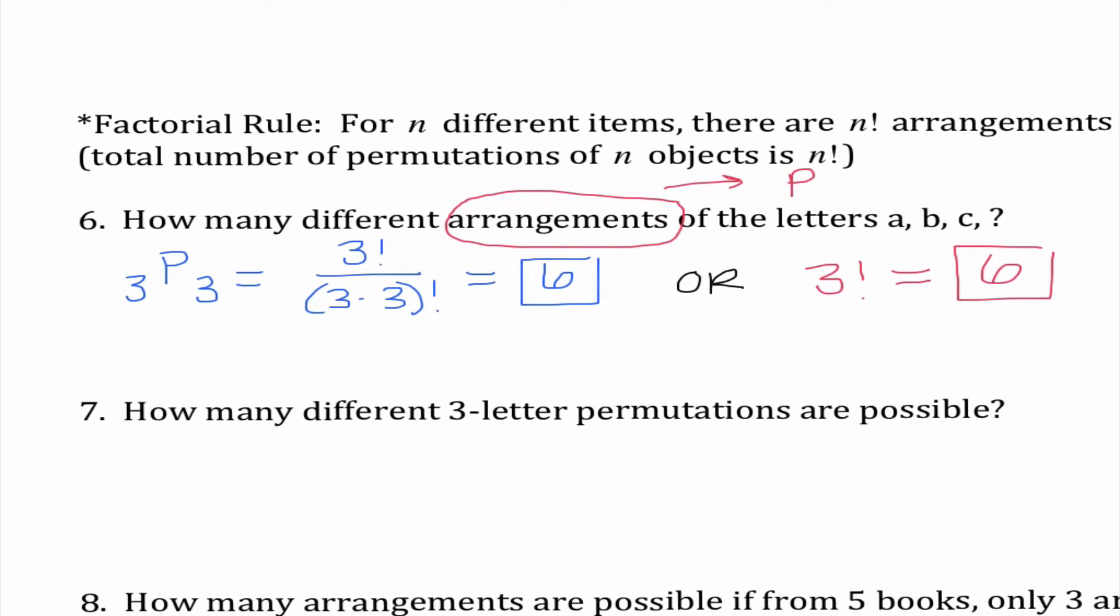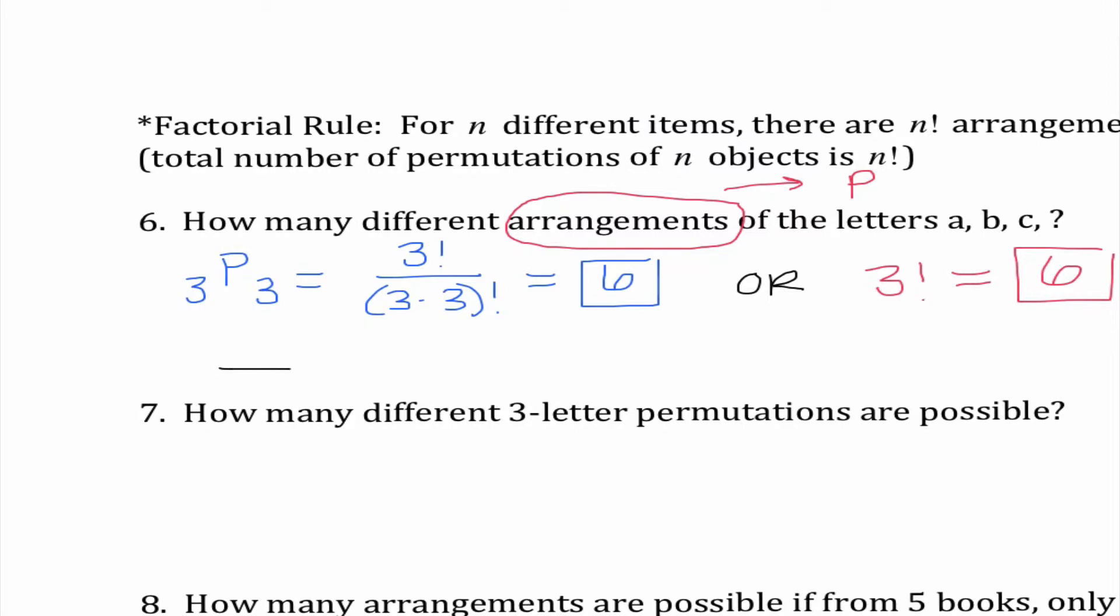And I guess I'm going to say there's a third way. We could also really think of this like the fundamental counting principle where I have three different options in the first spot. Then since I'm using one of those we have two left over that could be in the second spot and then only one left over in the third spot and once again that is 6. So I just want to highlight to us that there are definitely different ways that we could think about this.